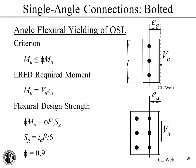For angle flexural yielding at the outstanding leg, our criterion—because this is flexure—is that the required moment must be less than the flexural design strength, phi M_N. The required moment for LRFD, M sub U, is V sub U times the eccentricity for the angle, E sub A. For a double column of bolts, it's the same way. The flexural design strength in this limit state is taken as the yield moment: phi times F sub Y times the gross elastic section modulus, which is T sub A times the length of the angle squared divided by 6.